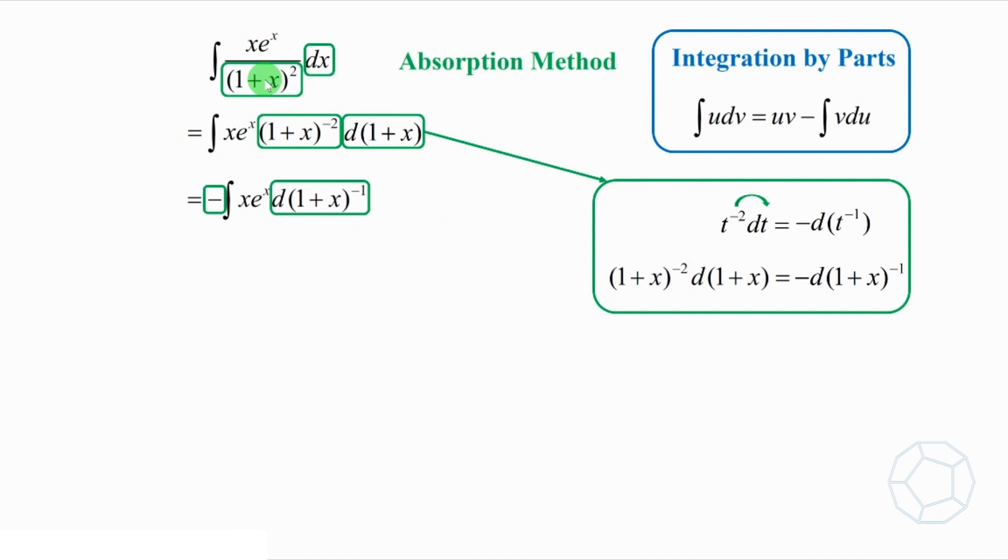Now, we are ready to apply integration by parts. Here, u is equal to x times e to the power of x, and v is equal to 1 plus x to the power of negative 1. Applying the formula, the first term is the product negative x times e to the power of x times 1 plus x to the power of negative 1.